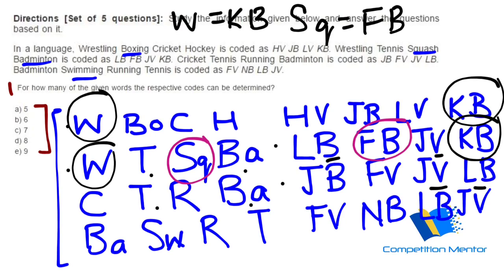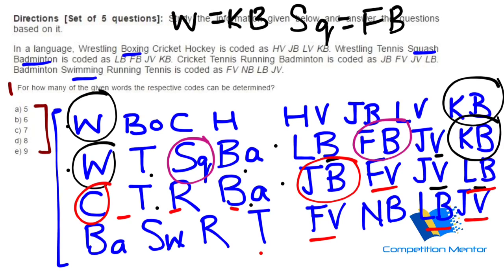Looking at the next set, I can see T here, T here, R here, and BA here — all three of them are present. So that can help me get Cricket's code. JV is there, LB is there, FV is there — all these codes appear. So Cricket C was not yet found, and I get C equals JV. Checking, there is C here as JV, so C equals JV.